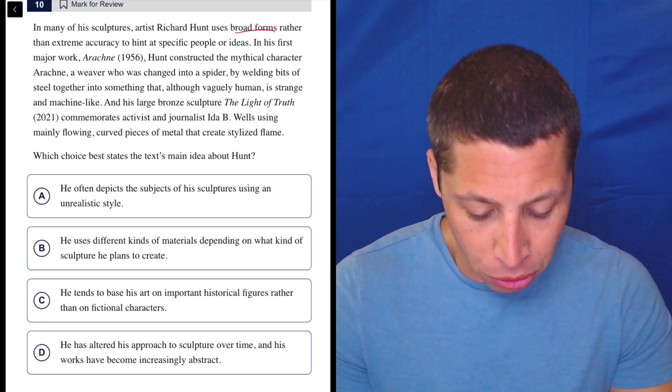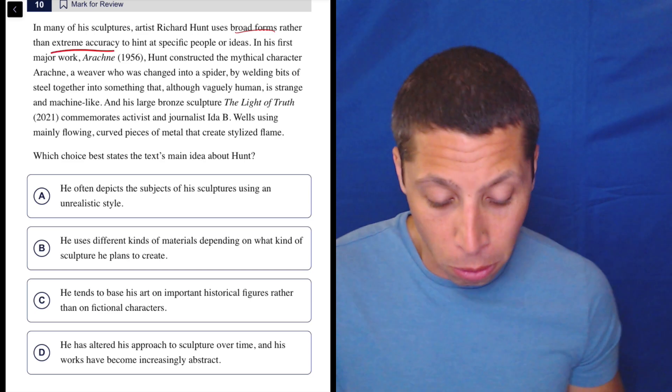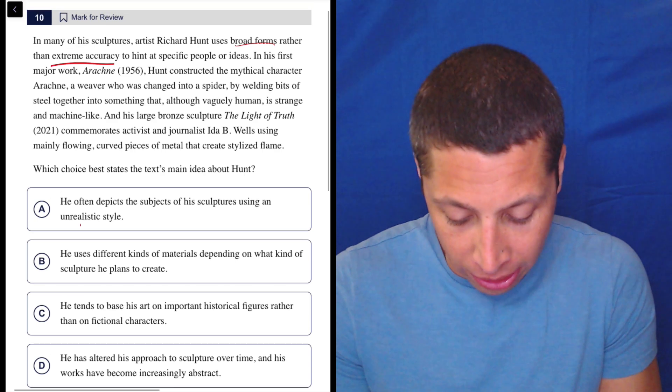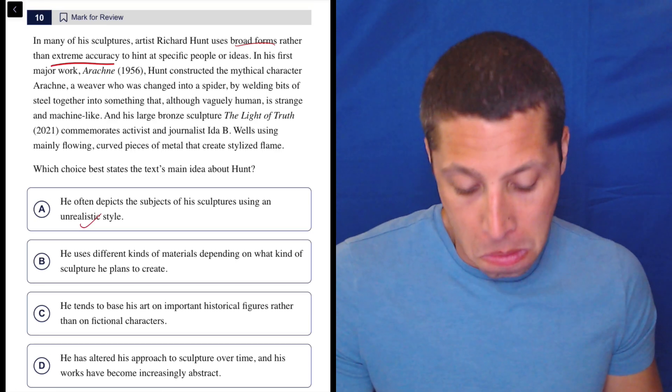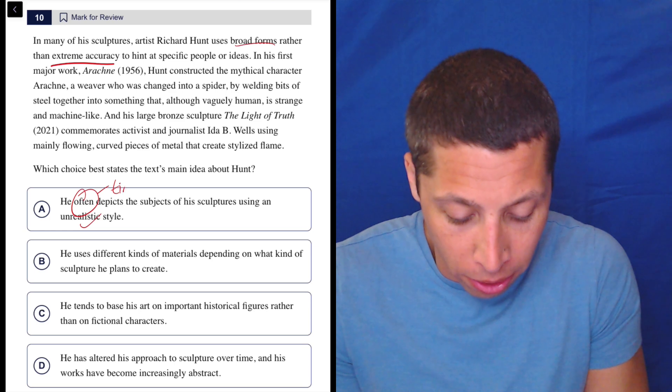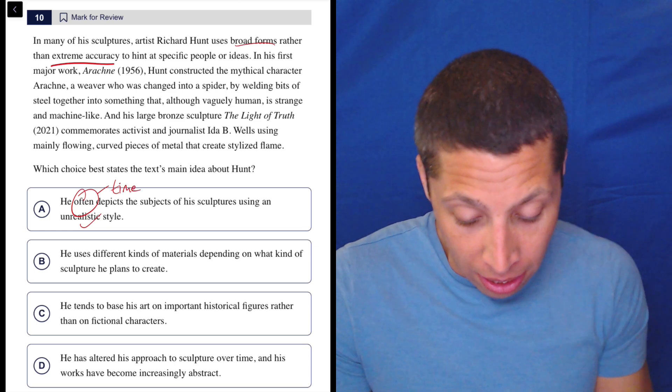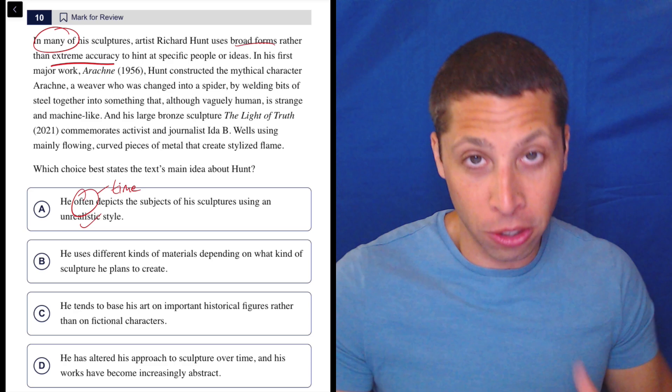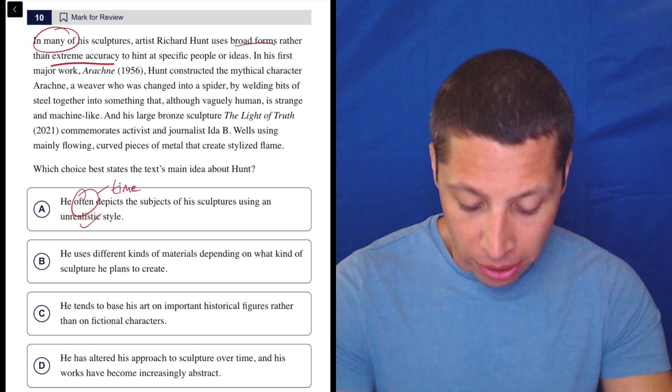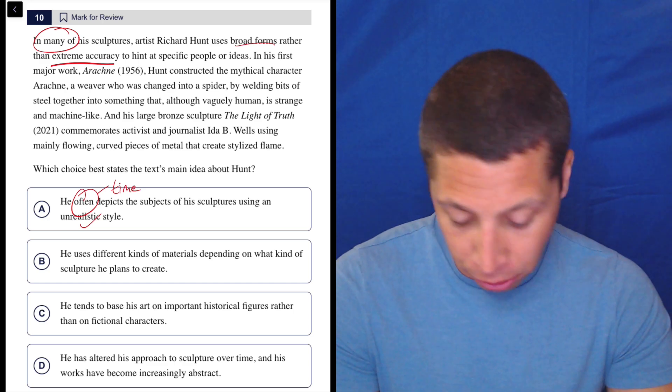He often depicts the subjects of his sculptures using an unrealistic style. Yeah, well, if it's broad forms rather than extreme accuracy, that seems like an unrealistic style. Now the word 'often' bothers me - that's a time word. We need evidence that something's happening again and again, but it does say 'in many of his sculptures.' So maybe that's proof of that. Let's just keep going. There's some things about A that are kind of sketchy, but whatever. It might be worse stuff than the other choices.